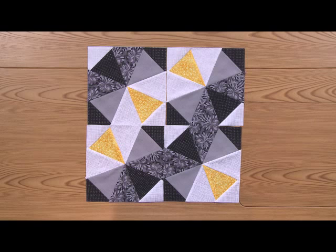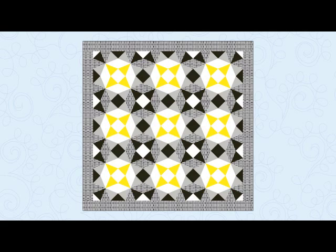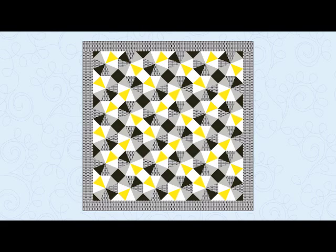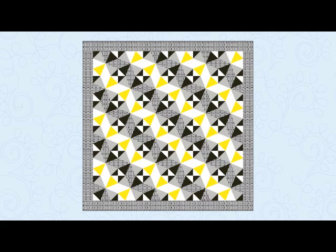The fun thing about this block, as you just saw in the other examples, is that there are multiple ways that you can arrange these blocks to create lots of fun and different designs. Here are six different designs that we've created. You can see that in some, the yellow points come together to form stars. There's a design like a barn raising where the design radiates out from the center. You've got diagonal bands of color that stretch across the design.